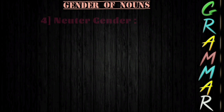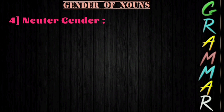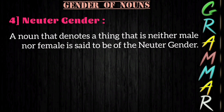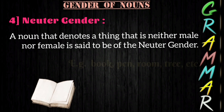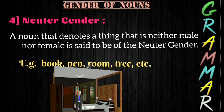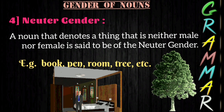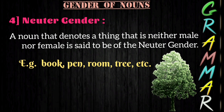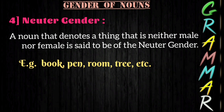The fourth type of gender is neuter gender. A noun that denotes a thing that is neither male nor female — that is, a thing without life — is said to be of the neuter gender. For example: book, pen, room, tree. These words do not have a gender, so such nouns are called neuter gender.